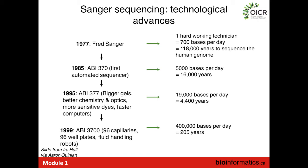Sequencers continued to be refined. The ABI 377 had bigger gels, better chemistry and optics, more sensitive dyes, and faster computers for base calling — increasing throughput by another four-fold, up to around 20,000 bases per day. Finally in 1999, a highly multiplexed version, the ABI 3700, was developed which could sequence 400,000 bases per day. If you ran one of these around the clock, you could sequence a human genome in around 200 years.